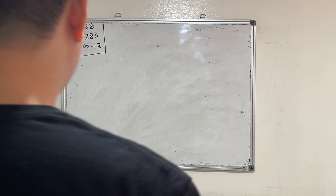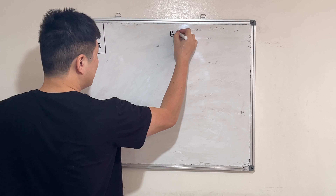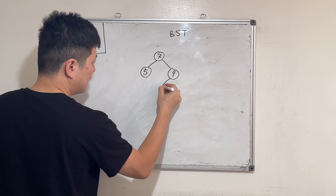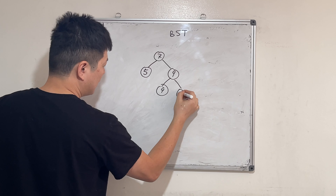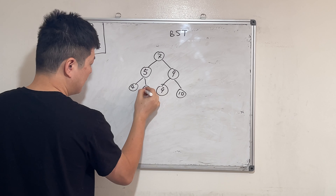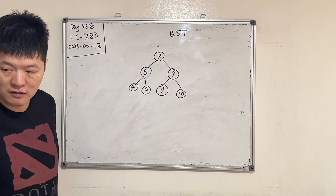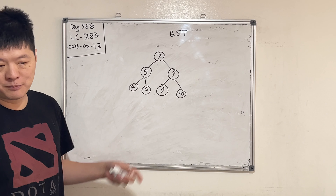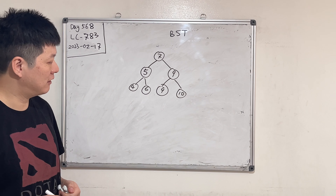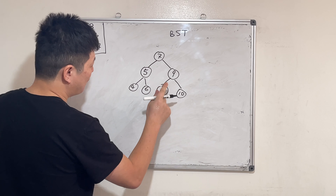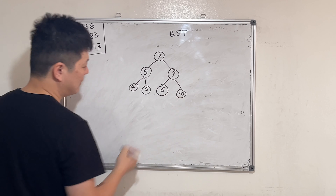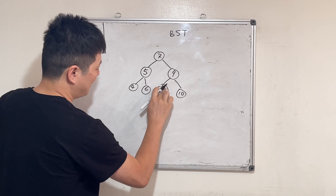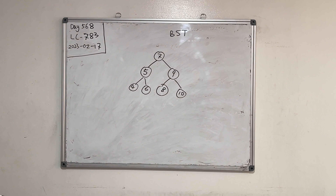What is a binary search tree? A binary search tree is a tree with numbers where the one on the left side has to be smaller than the parent, and the one on the right needs to be bigger. They still need to satisfy this recursively. For example, nine is not smaller than nine, and six is not bigger than seven. So let's put eight here — this is the binary search tree.